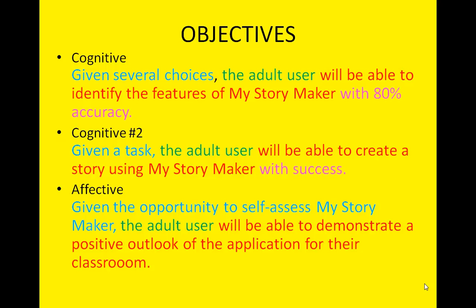We have three objectives set forth. One, given several choices, the user can identify the features of My Story Maker with 80% accuracy. A second, given a task, the adult user can create a story using My Story Maker with success based on the success criteria found within the instructional product. And third, given the opportunity to self-assess, the adult user can demonstrate a positive outlook of the application for their very own personal classroom.